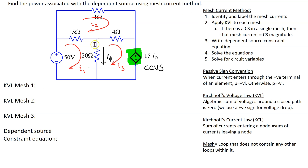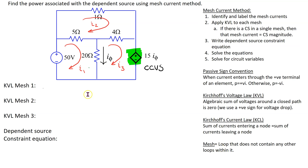The first step is indicated here. In this circuit we have one, two, three meshes. Recall that a mesh is a loop that does not contain any other loops within it. Here we have arbitrarily labeled the loops I1, I2, and I3. We have also assumed clockwise direction for all the loops; however, a different direction does not change or impact the mesh current method.